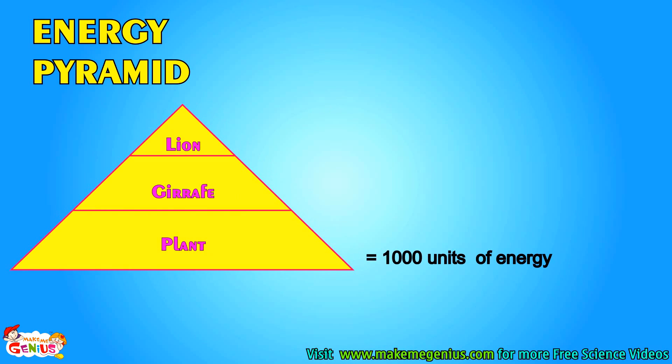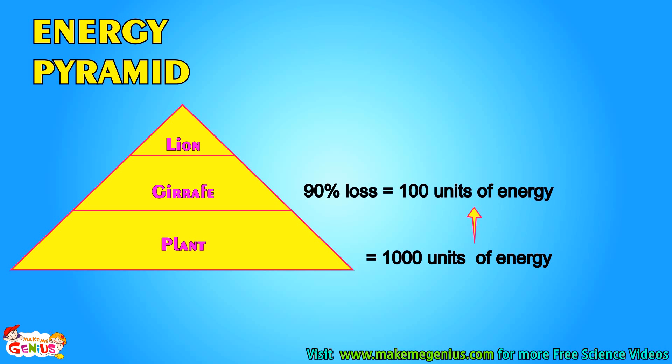Look at this pyramid. It is called an energy pyramid. This shows that energy available becomes lesser and lesser as we move to the top of the food chain. To understand the energy pyramid, let's assume plants absorb 1,000 units of energy from the sun. When a giraffe eats it, 90% energy is lost, so the giraffe only gets 10% of energy — that is 100 units of the 1,000 units of plant energy. Now when a lion eats the giraffe, 90% energy is again lost and the lion gets only 10 units of energy.